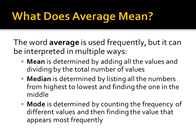Now let's talk about the word 'average,' because we use it all the time without thinking about the intention behind it. In research, there are very specific ways of defining average, divided into mean, median, and mode. The mean — the one we most associate with 'average' — is calculated by adding up all the values and dividing by the total number of values. Median is determined by listing all numbers from highest to lowest and finding the one in the middle. Mode is determined by counting the frequency of different values and finding the value that appears most frequently.